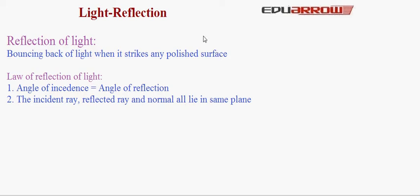Light is reflected according to certain laws. The first law of reflection of light is: the angle of incidence is equal to angle of reflection. These angles are measured with the normal. The second law of reflection of light is: the incident ray, the reflected ray, and normal all lie in the same plane.